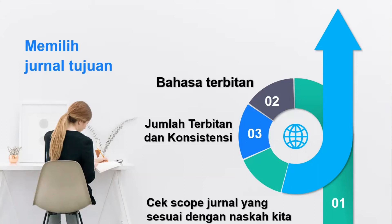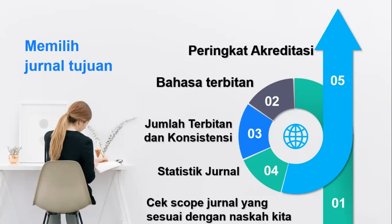Kita perlu memperhatikan statistik jurnal: berapa lama proses review-nya, berapa lama proses accept-nya, dan accepted rate-nya seperti apa. Ada jurnal yang accepted rate-nya sangat rendah dan decline-nya sangat tinggi — bukan berarti harus dihindari, justru kalau accepted rate-nya sangat rendah berarti editornya sangat selektif. Kalau di jurnal nasional, kita perlu memikirkan peringkat akreditasi. Kalau di Scopus, kita perlu memikirkan kuartilnya. Di Web of Science, kita perlu melihat impact factor-nya.